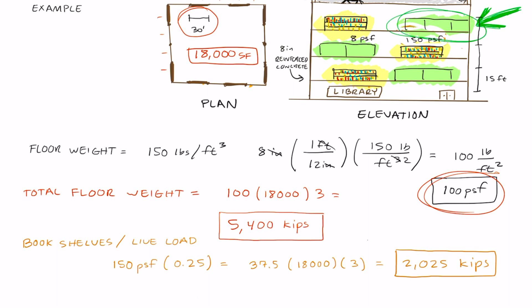Now let's consider the weight of the partitions. In this case, the partitions are 8 pounds per square foot. In ASCE 7-16, we know that we only need to include the partition weight if the partition weight is greater than 10 pounds per square foot.